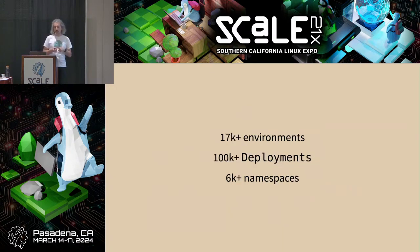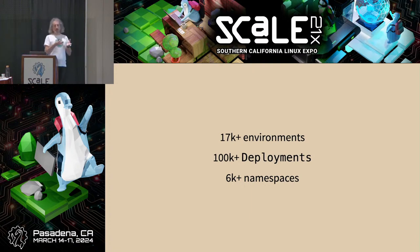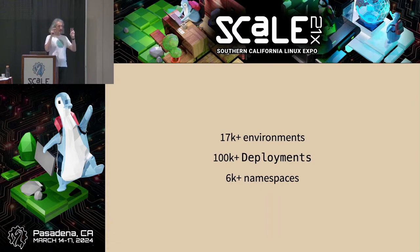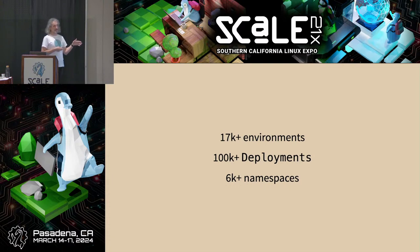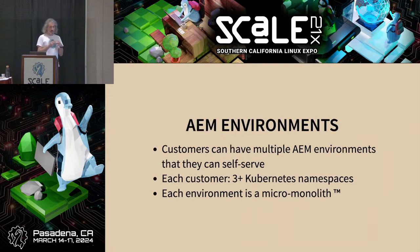We have 17,000 environments. An environment is a set of deployments we give a customer. A customer can have multiple environments — this comprises multiple Kubernetes deployments, services, and Kubernetes objects. That means we have more than 100,000 deployment objects across all our Kubernetes clusters, and over 6,000 namespaces. That's the scale for just the single Adobe product AEM.